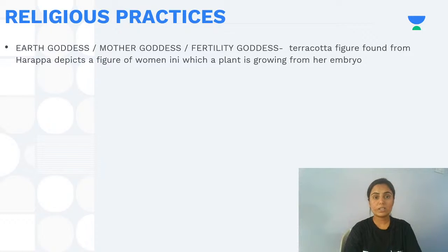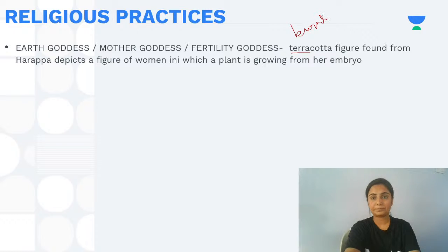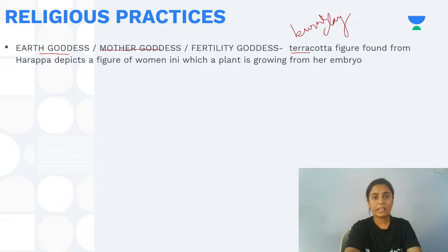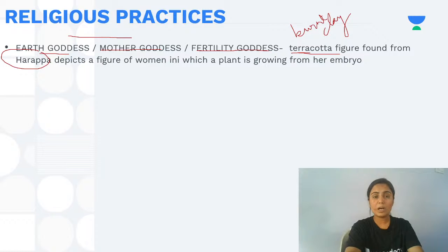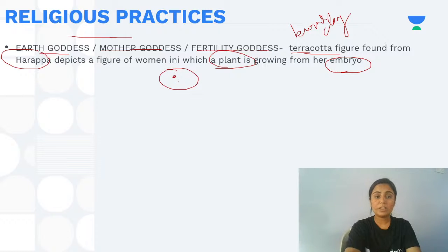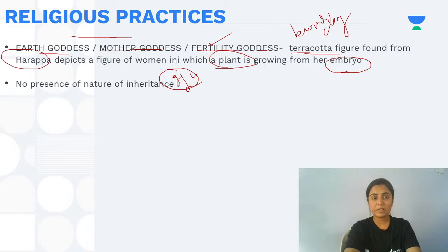In religious practices, a terracotta figure of an earth goddess — also called mother goddess or fertility goddess — was found at Harappa. The figurine depicted a woman from whose womb a plant was growing, clearly indicating worship of earth and fertility as divine.